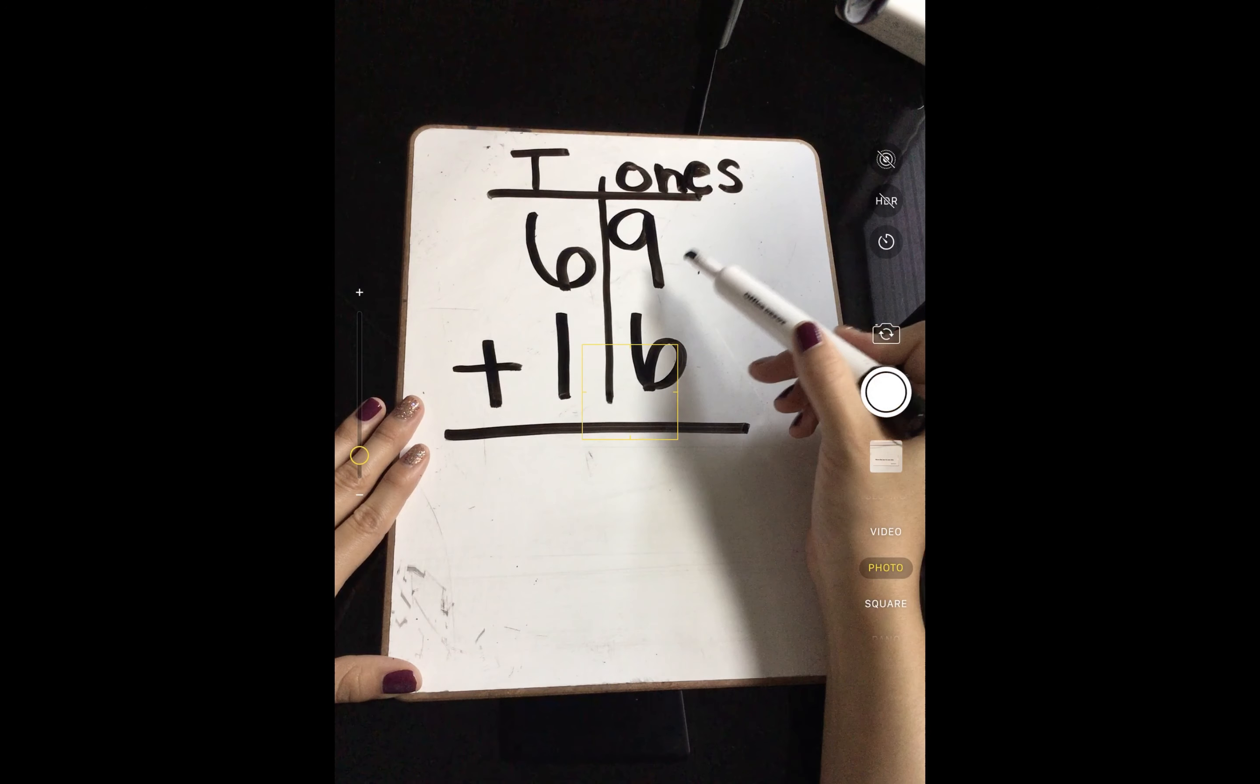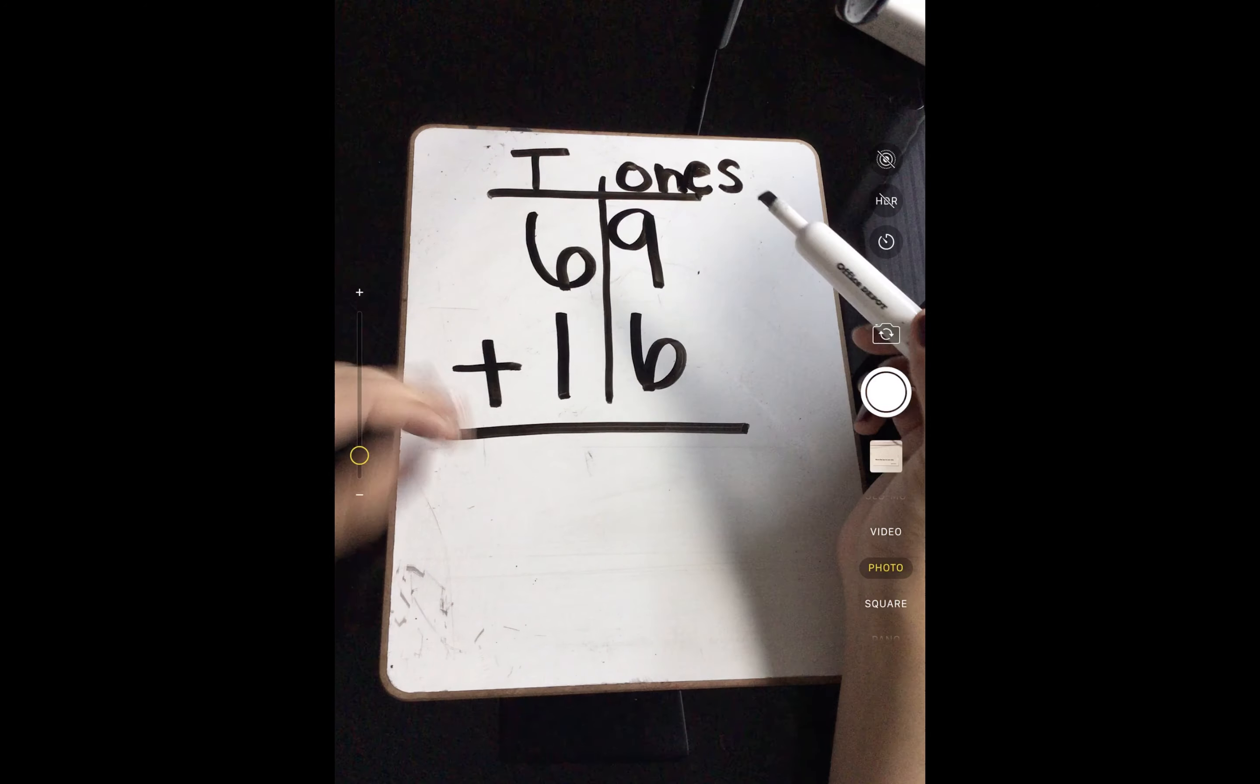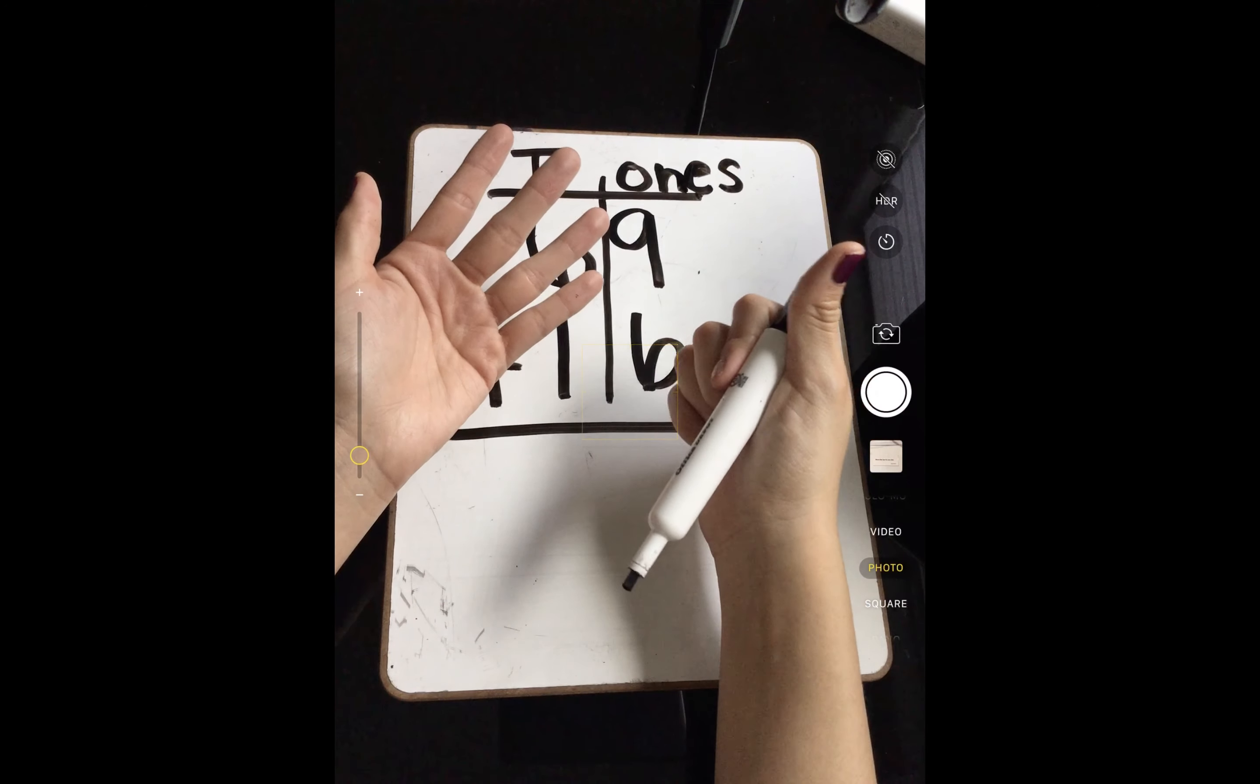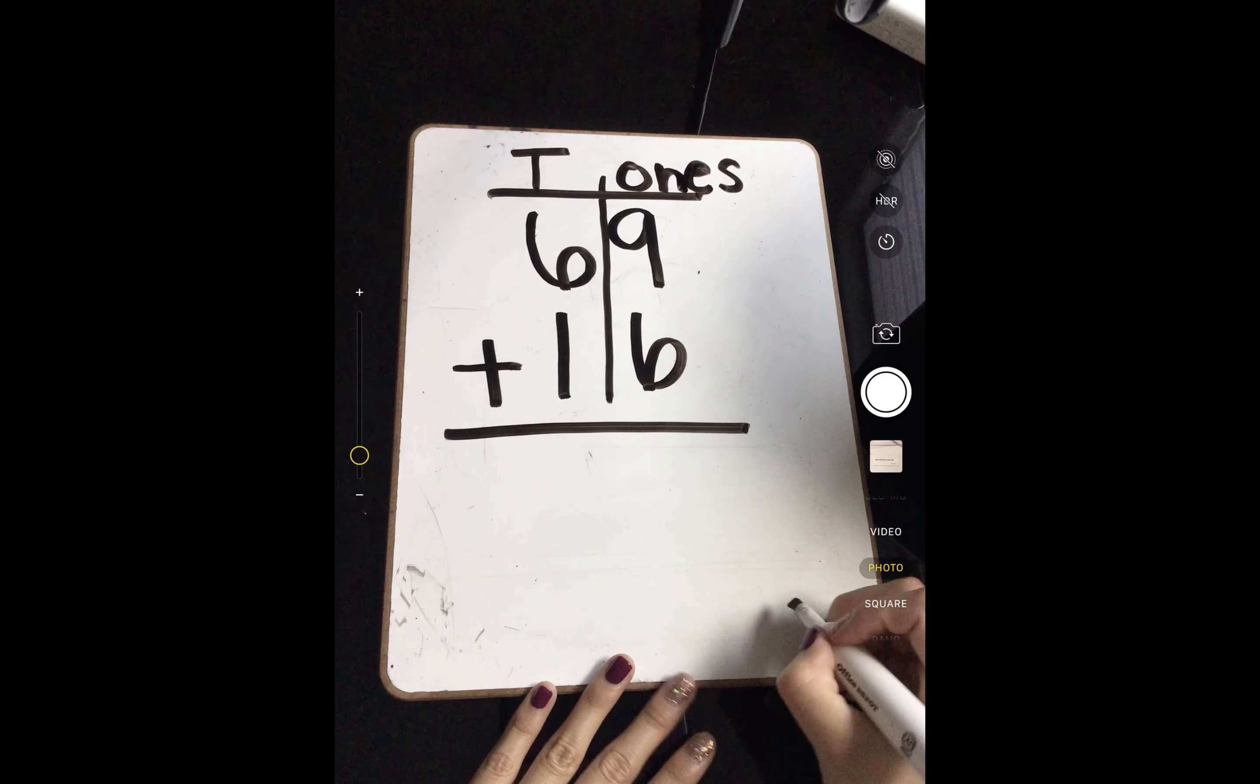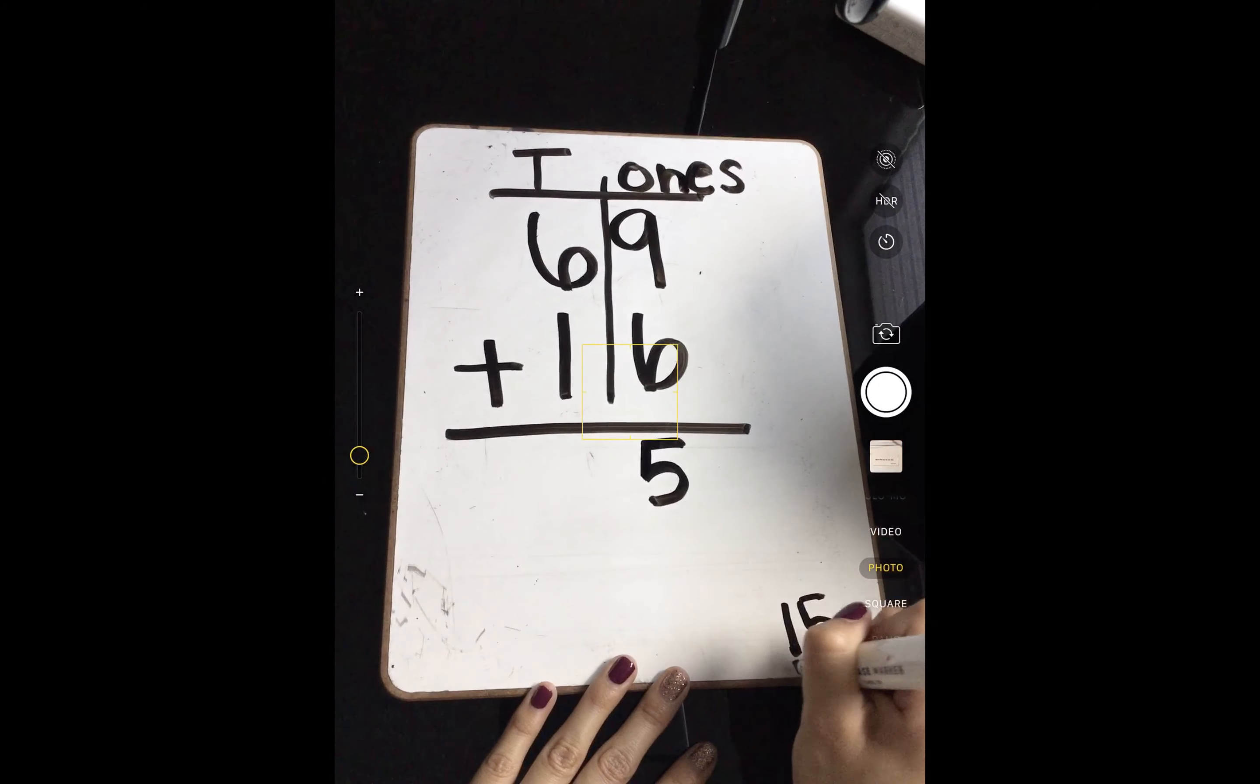So we have 9 plus 6. So 9 put in my brain, add up to 6. So 9, 10, 11, 12, 13, 14, 15. So my sum is 15, but I can't write 15 here. So I got to think, 15 has 5 ones and 1 ten.